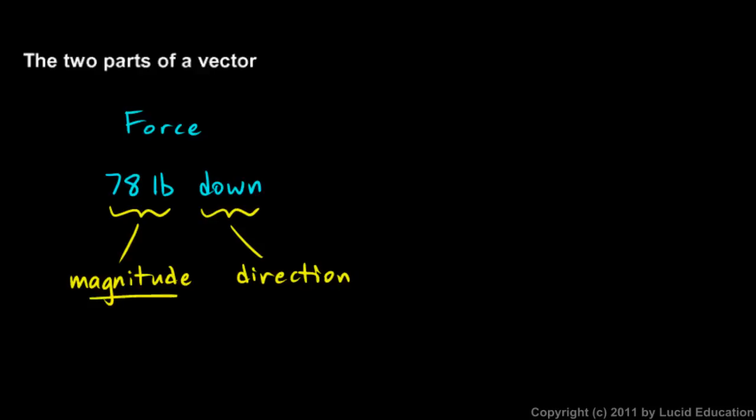So we see a vector has magnitude and direction. Here's another example. Velocity is a vector.